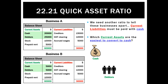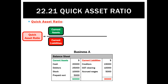Based on that, it's quite easy to say I'd much rather be business A. Between cash and debtors it's got $45,000, but business B only has $10,000. This all comes down to what's called the quick asset ratio, which is basically the working capital ratio — current assets divided by current liabilities — but we paint with a finer brush. Out of current assets, we get rid of stock and we get rid of any prepaid expenses.